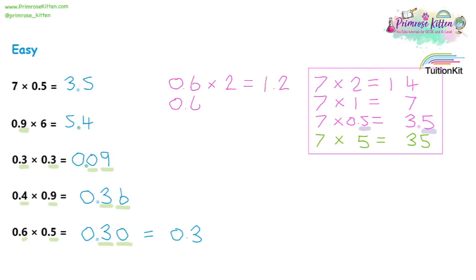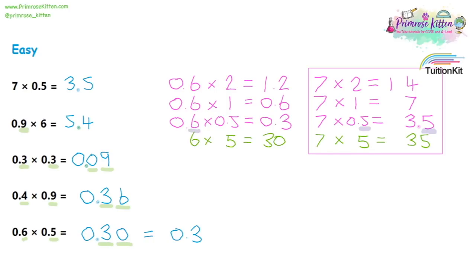If we do 0.6 times two, we do six times two giving us 12, and move the decimal place one over to give us 1.2. Another way to think of this: 0.6 times one is 0.6, so 0.6 times 0.5 is half of that, giving us 0.3. We can see that six times five is 30, very similar to 0.6 times 0.5, where you can see the space after the 0.3 where the 30 would have been.